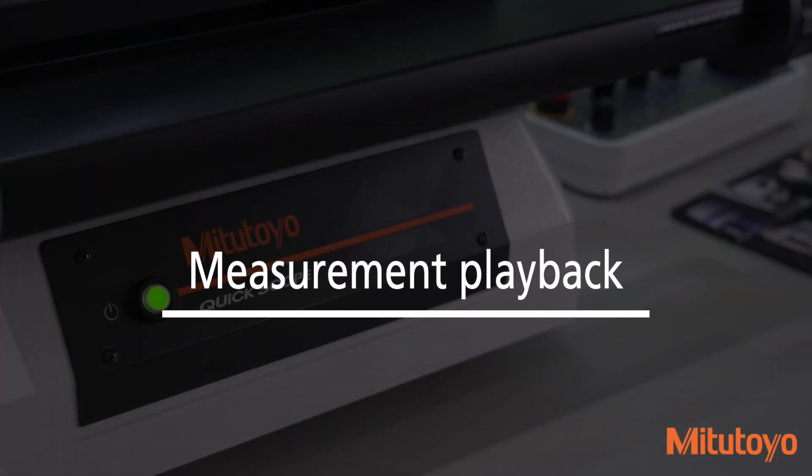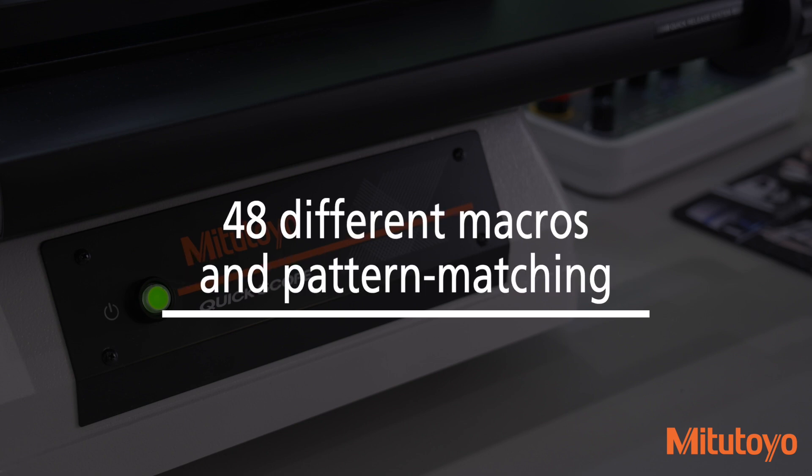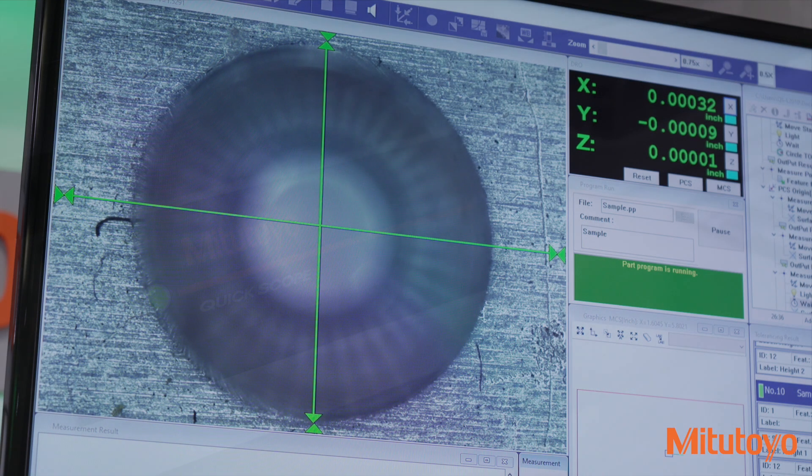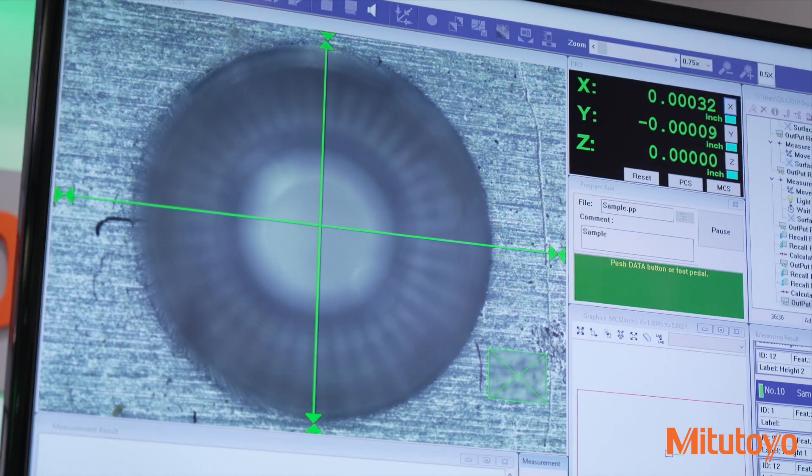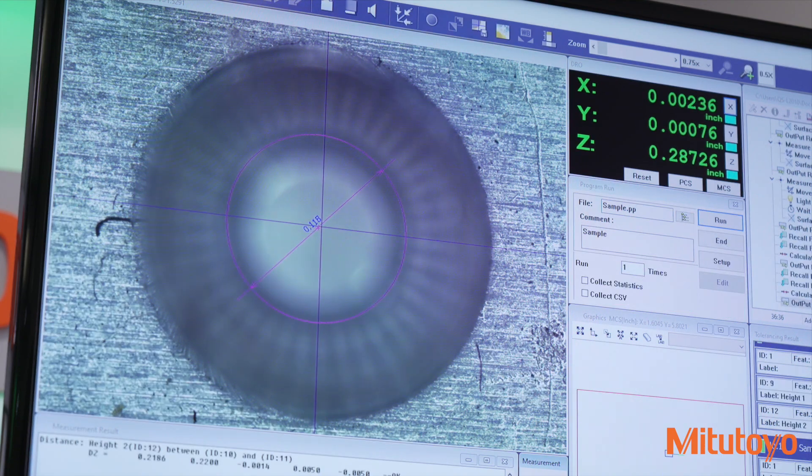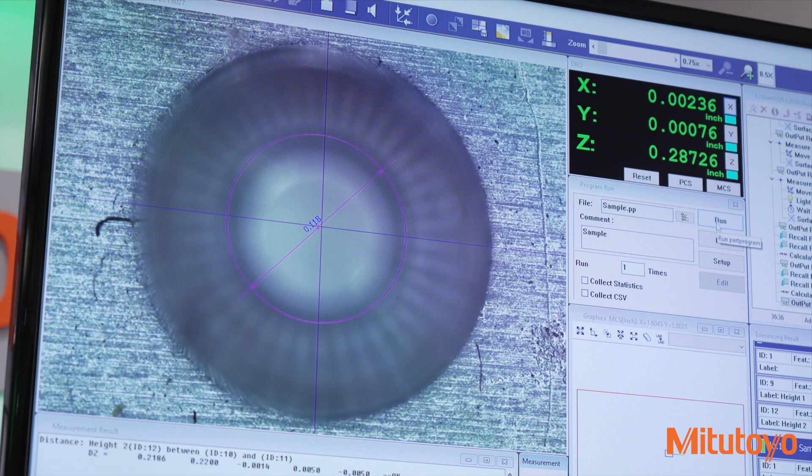Functions such as autofocus, measurement playback, one-click edge detection, 48 different macros, and pattern matching for several common part features help improve your measurement efficiency. The autofocus tools allow focusing to achieve highly accurate height measurements by removing operator errors.